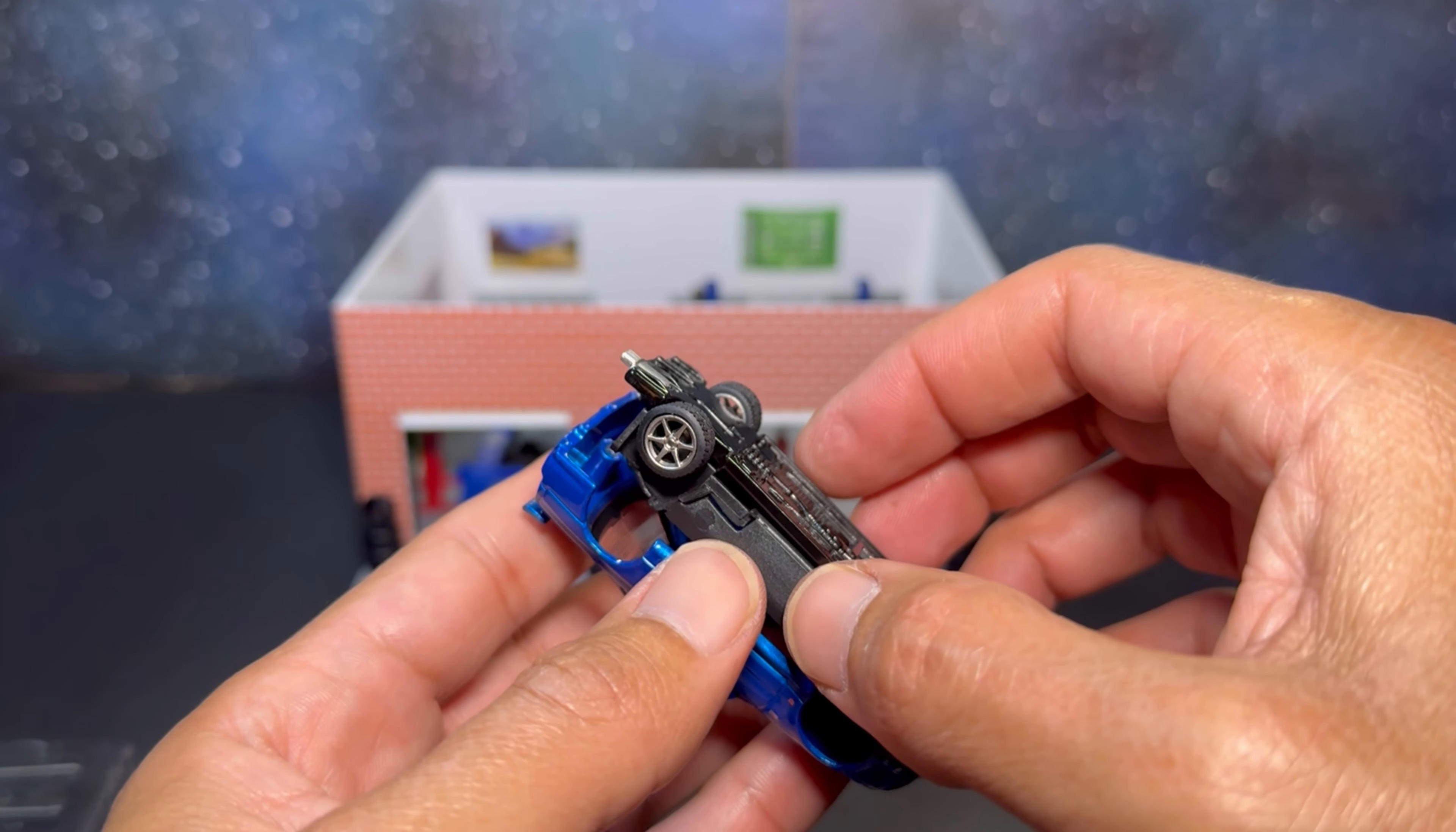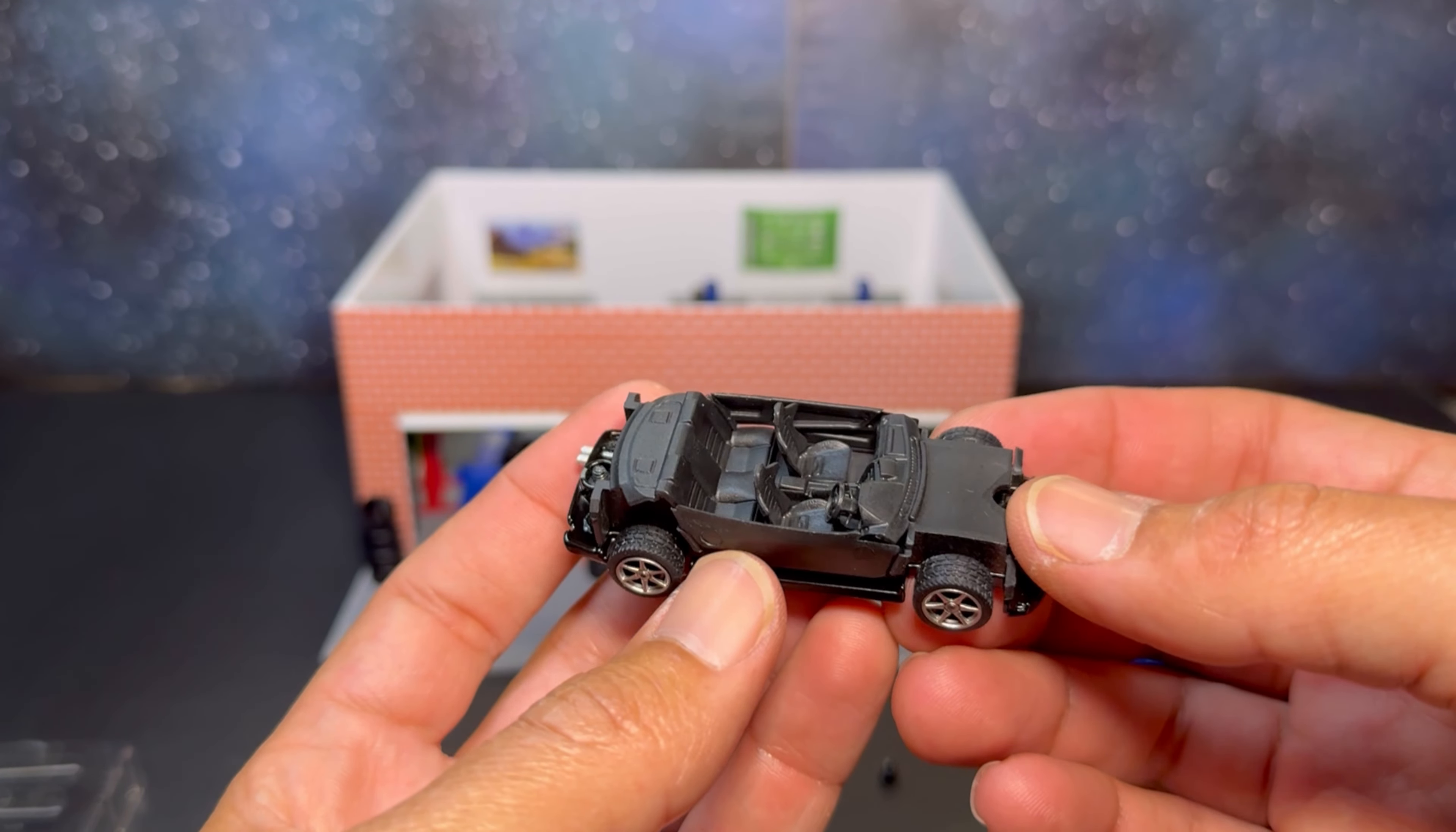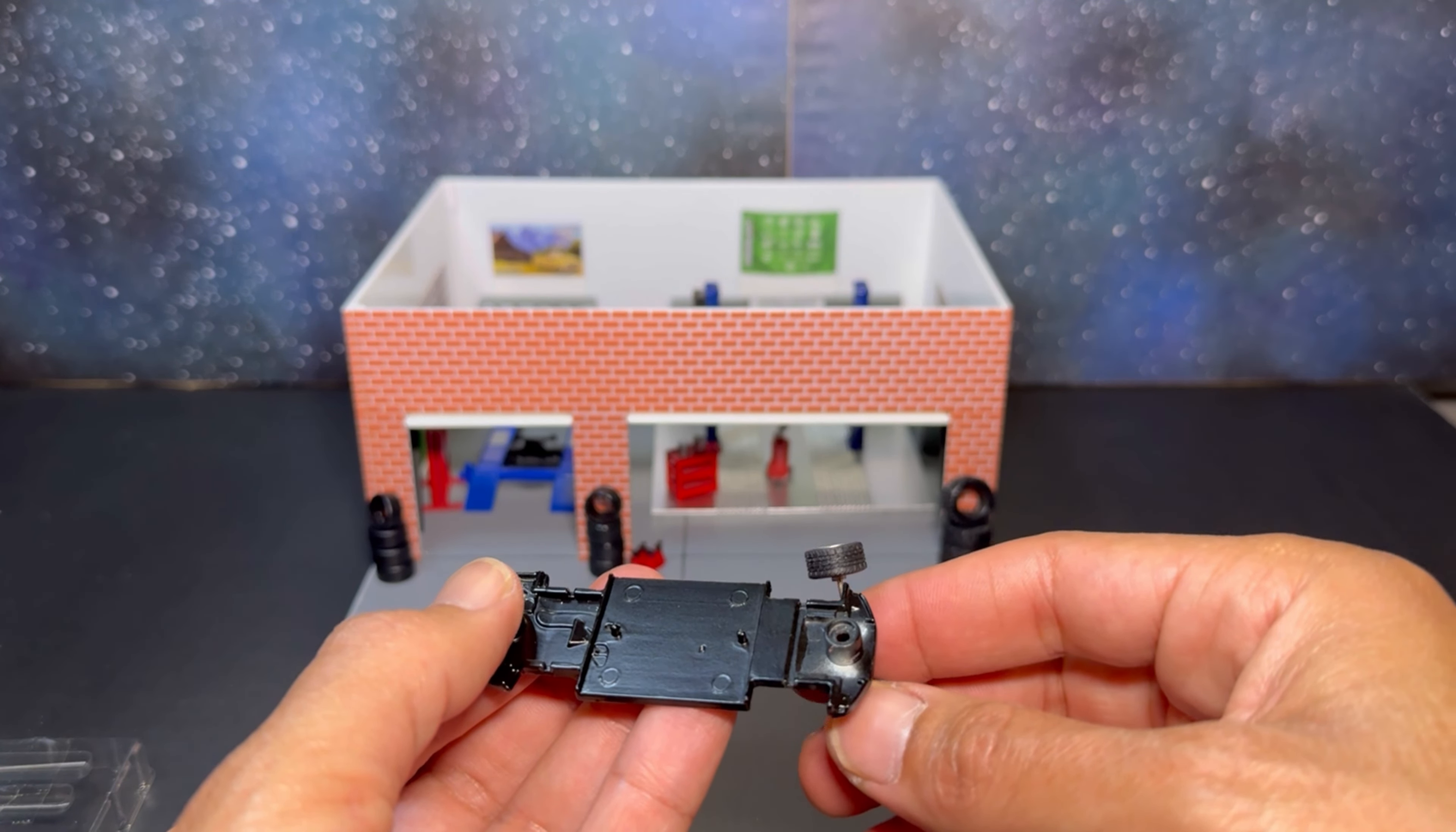All right. So it took a little bit of work to get those screws out. They actually didn't even come out of the base. They just unscrewed from the body itself. So that was kind of strange, but no problem. We'll take it. So we've got our body off. This is what your interior looks like on a mini GT for those of you who maybe haven't ever opened one of these before. So this is kind of pressed on a little bit, like pretty much snaps in place. So let's see if we can get that out without breaking anything. All right. Interior's out.